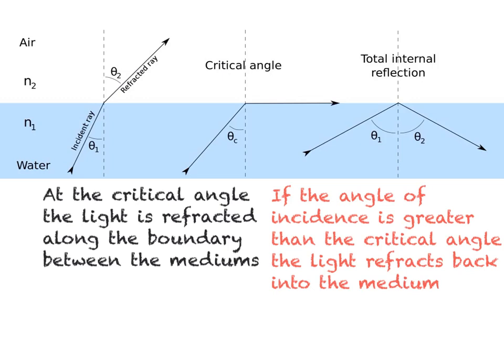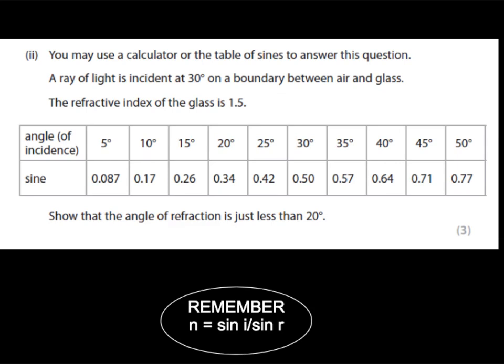We will now look over an examination style calculation question that we looked at in the previous video. A ray of light has an incident angle of 30 degrees on the boundary between air and glass. The refractive index of the glass is 1.5. The angle of refraction is going to be just less than 20 degrees. We are going to be using the equation n equals sine i over sine r. This is Snell's law that we looked at in the previous video.